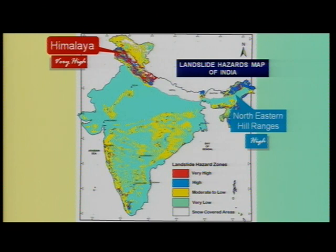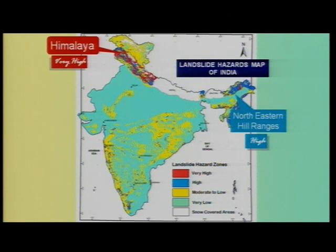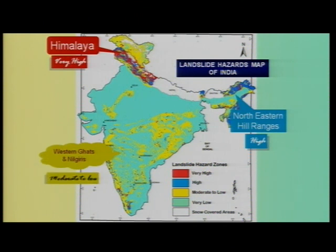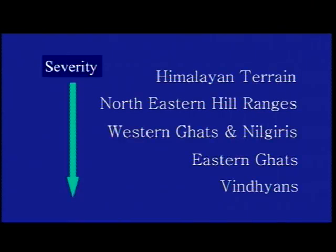Let us see the landslide hazard map of India. It shows that in the Himalayan terrain, it is very high, and it is high in the northeastern hill ranges, and moderate in the Western Ghats and Nilgiris. The severity comes down from the Himalayan terrain, from the northeastern region, then Western Ghats, Nilgiris, and Eastern Ghats and the Vindhian.